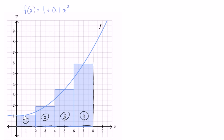Their height seems to be based on the midpoint. So between the left side and the right side of the rectangle, you take the value of the function at the middle value. So for example, this height right over here looks like f of one, this height looks like f of three, this height is f of five, and this height right over here is f of seven.